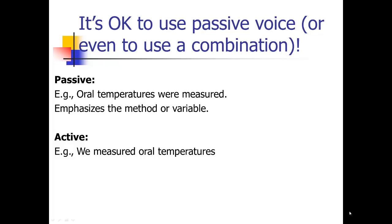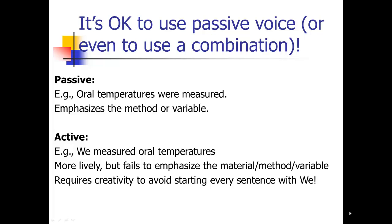The active voice here would be, 'we measured oral temperatures,' and that's okay. It's more lively, but again, it fails to emphasize the material method or variable. So that's a drawback. And also, in order to put the whole method section in the active voice, you have to be really creative. Because it's mostly we, it's mostly the authors who are doing all the actions. And so, to avoid starting every sentence with we, you're really going to have to be very creative. And it's probably just not worth that much effort. So again, the one section where I'm going to say if you want to reduce some passive voice, go ahead, is the method section.